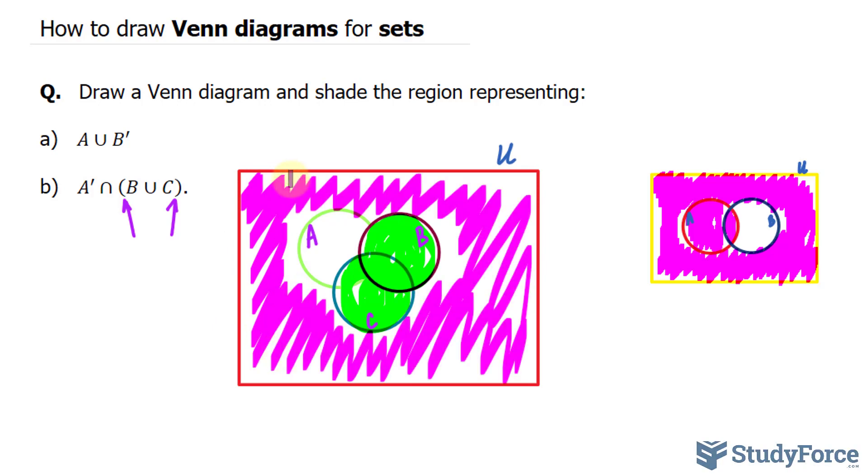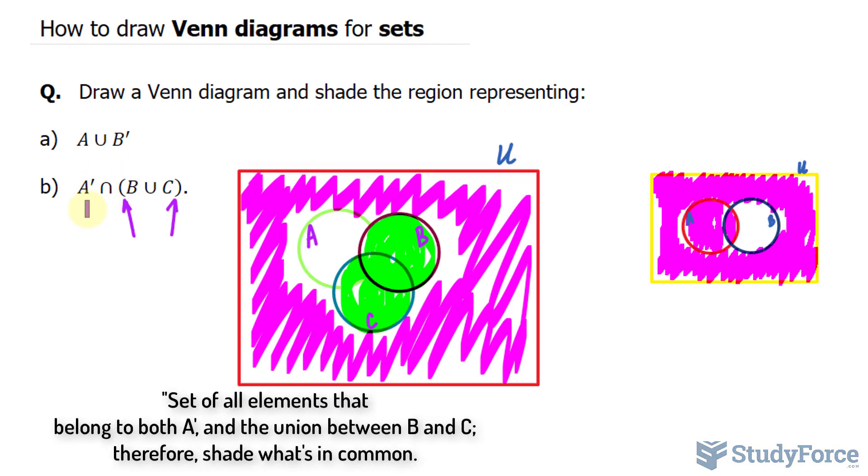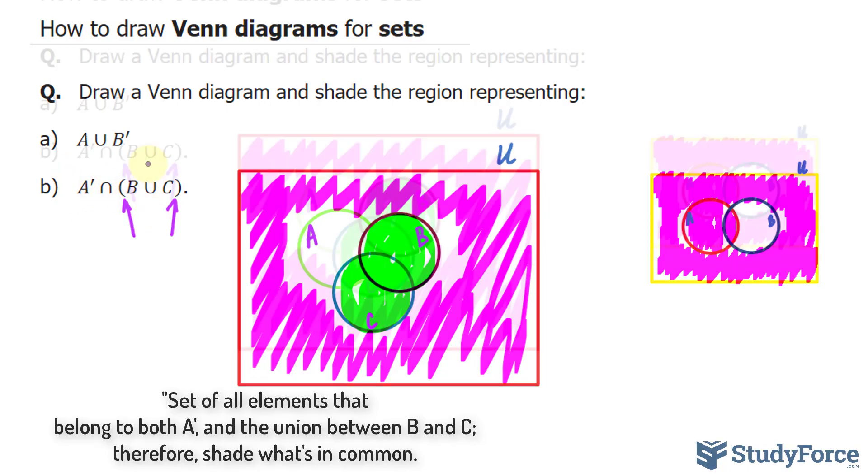Now we'll take it all together. We have the complement of A intersecting with B and C. Now if you don't recall, what an intersection means is the set of all elements that belong to both, in our case, the complement of A and the union between B and C. In other words, we're looking for elements in which are in common here and over here.